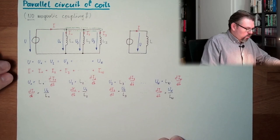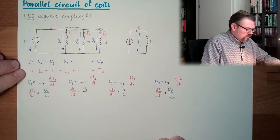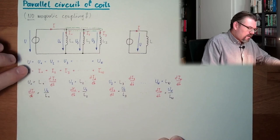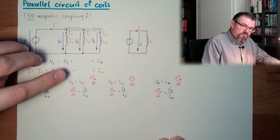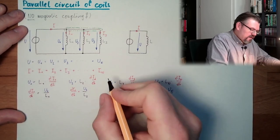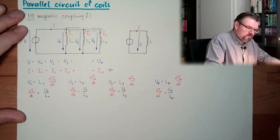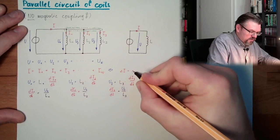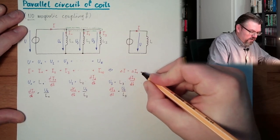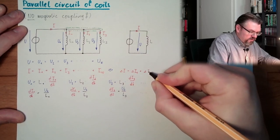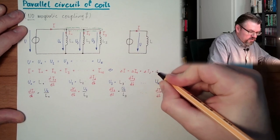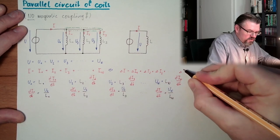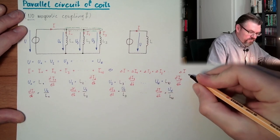And if all currents are the same, then I can say also the change of I equals the change of I1 plus the change of I2 plus the change of I3, and so on, plus the change of In.